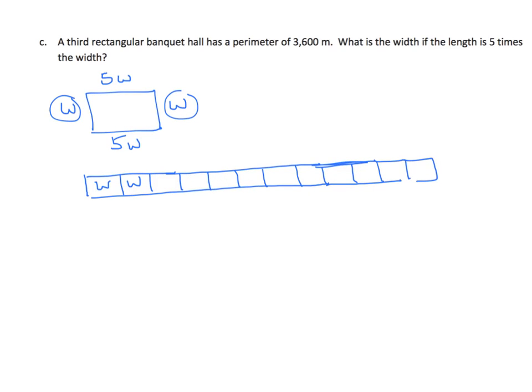Let's count that and make sure we have that right. 1, 2, 3, 4, 5, 6, 7, 8, 9, 10. Good. These are all Ws. So now we're going to bracket the top, and we know that all those Ws together is 3,600.